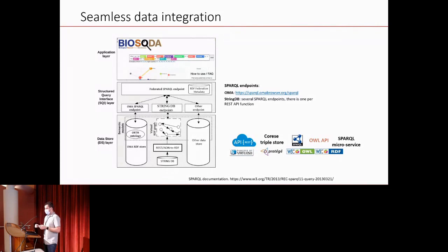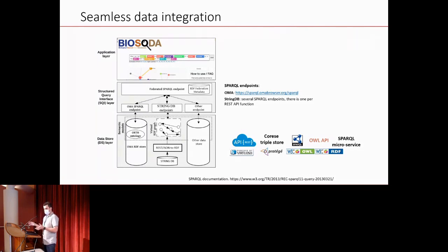The architecture we implemented has three layers: an application layer that could be a keyword search engine such as BioSODA; a SPARQL query interface that homogenizes the different ways to access data using the SPARQL query language; and a data store layer where the data actually resides. To make data accessible to a knowledge graph via SPARQL, we also develop ontologies — for example, for the STRING database — as data schemas to structure the retrieved data.